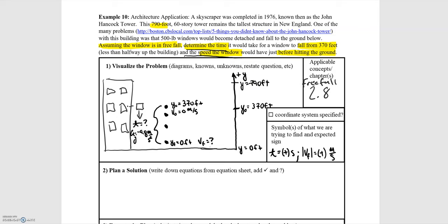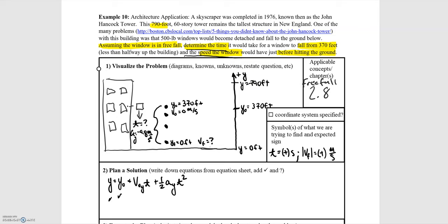We have two variables to find — time and final velocity — so we'll need two equations. I'll start by solving for time using the kinematics equation for position as a function of time: y equals y-naught plus v-naught-y multiplied by time, plus one-half the acceleration in the y direction multiplied by time squared. We know the final and initial positions, the initial velocity, and the acceleration, so we have one equation and one unknown and can solve for time.